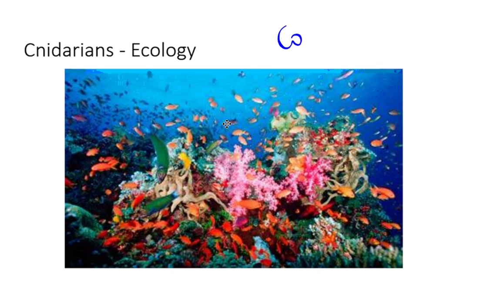Corals are cnidarians that form polyp stages, clumping together, and as they die they harden and form giant structures called coral reefs. Coral reefs are like the rainforests of the sea, containing a rich diversity of species that use the reef for habitat, bringing in predators, plants, and enormous biodiversity. Coral reefs are currently struggling due to human activity and global warming, which are destroying them worldwide.